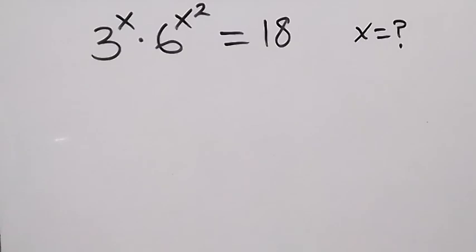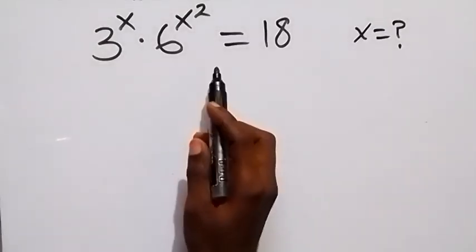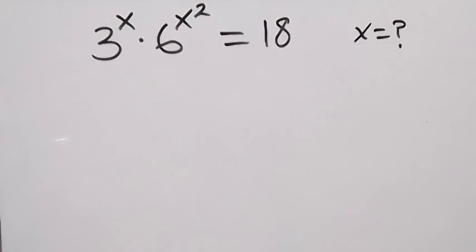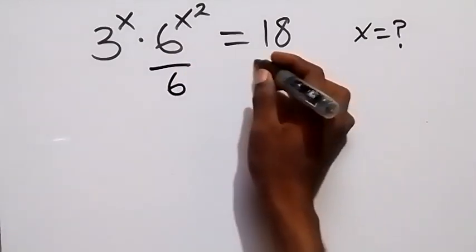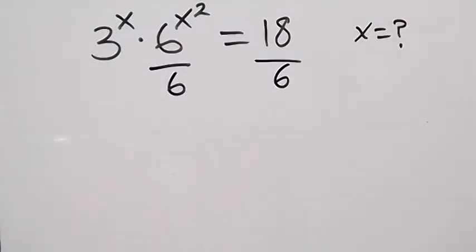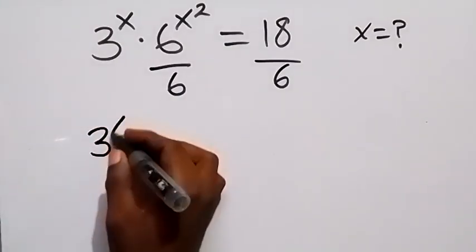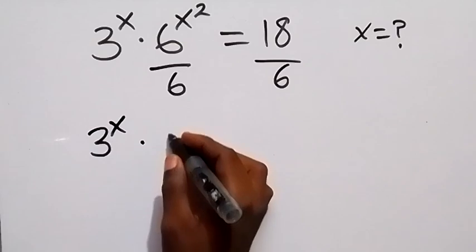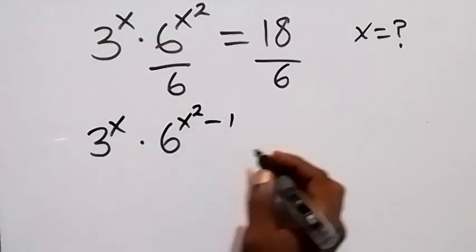Hello, you are welcome. How to solve this problem: 3 raised to power x times 6 raised to power x squared equals 18. Let's divide both sides by 6, so divide this side by 6 and also divide this side by 6. This becomes 3 raised to power x times 6 raised to power x squared minus 1.